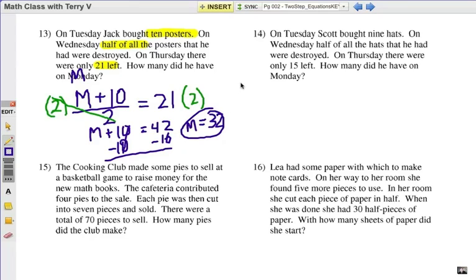If you think you know what to do, you want to give these a shot, click on pause. Number 14. On Tuesday, Scott bought nine hats. On Wednesday, half of all the hats he had were destroyed. On Thursday, there were 15 left. How many did he have on Monday? Same type of question, right? Do you know what the equation would be?